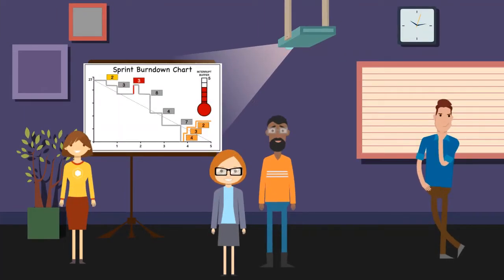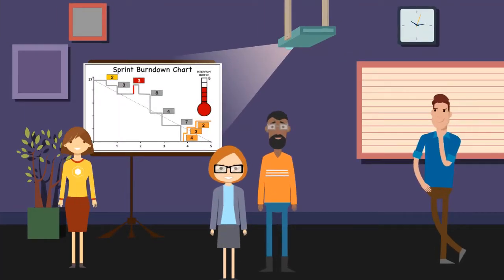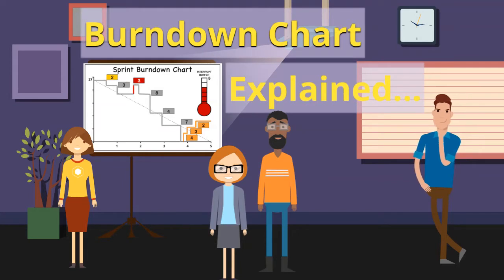In Scrum, a burndown chart is a data-based visual representation of progress towards a goal. Burndown charts are used in many different ways, including release planning and tracking progress towards a known goal.